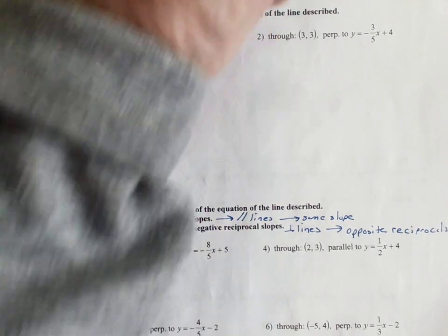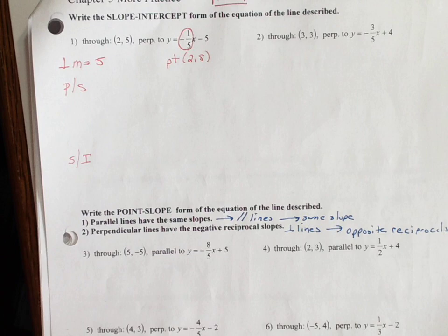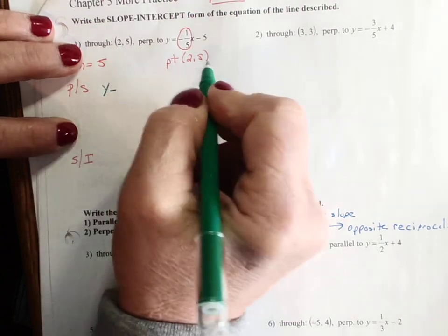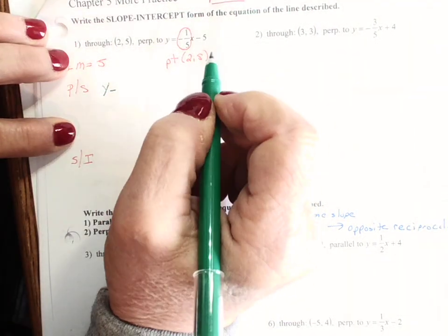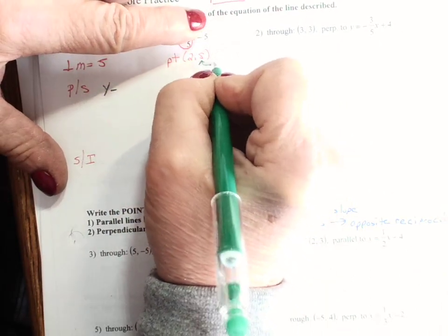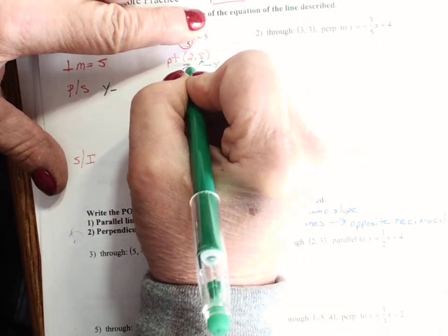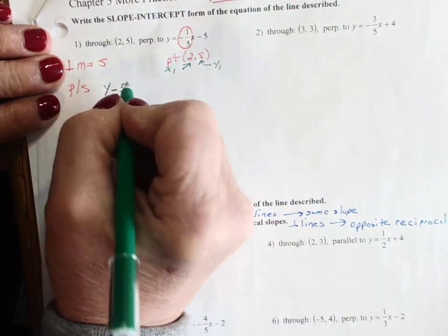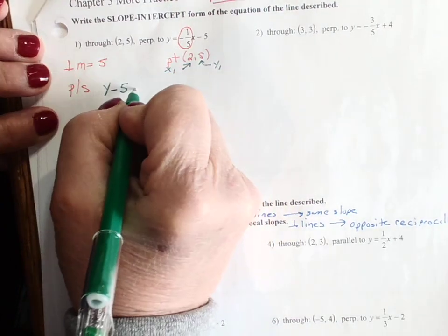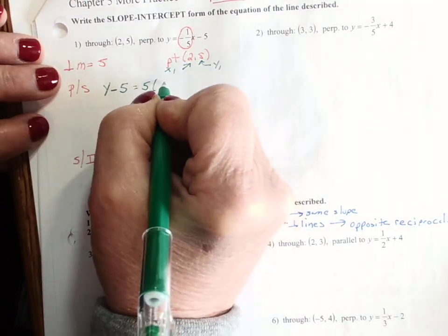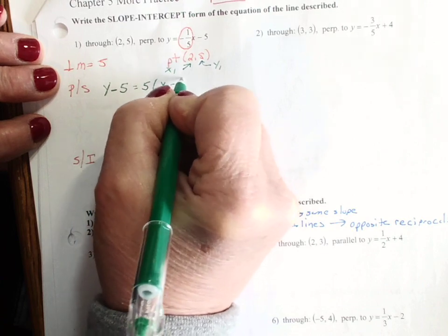So that's great. We have that information. So now it's very easy to put it into point slope. So y minus 5, y minus y1. So this is y1 and this is x1. Y minus y1, y minus 5 equals, the slope is 5, x minus 2.